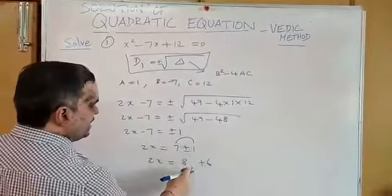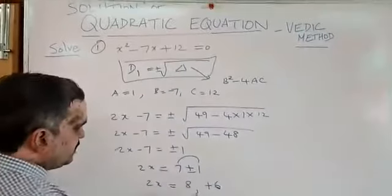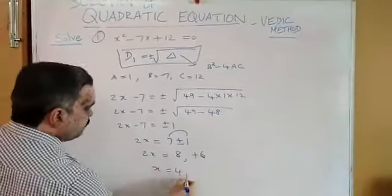7 plus 1 is 8. 7 minus 1 is 6. Dividing by 2, you get 4 and 3.